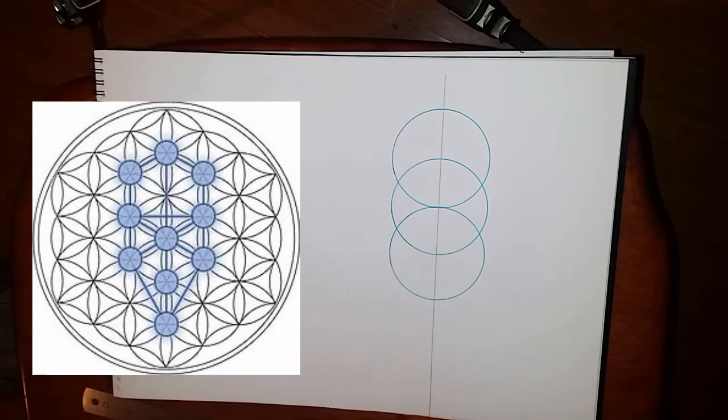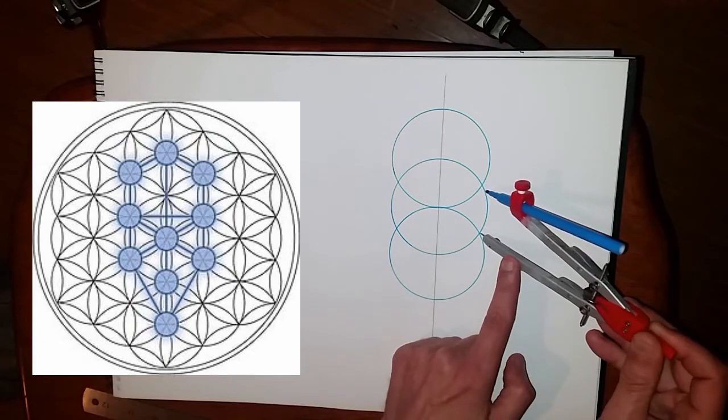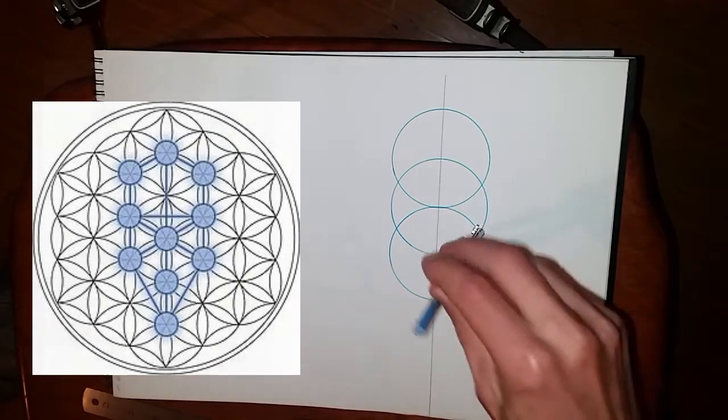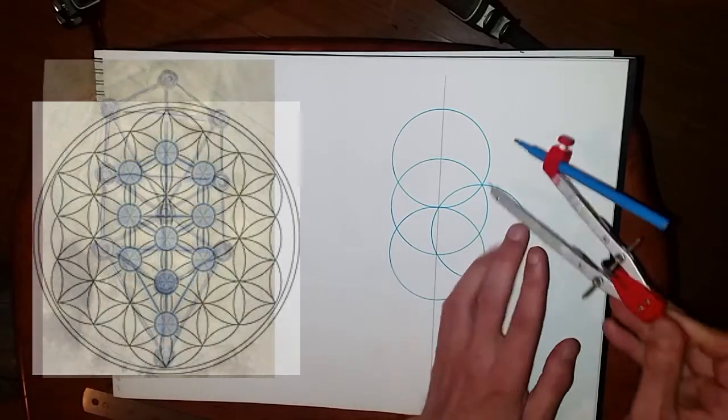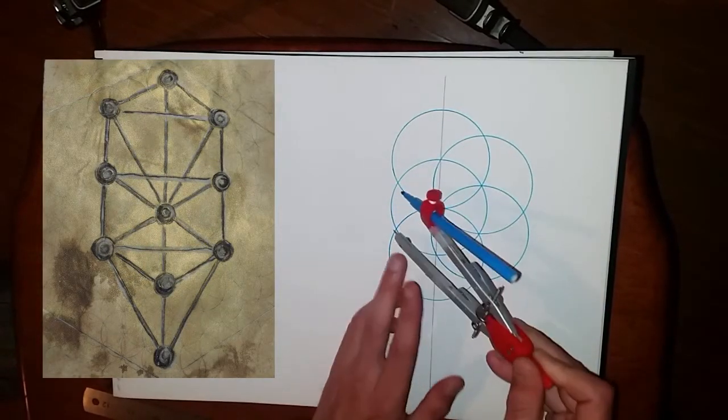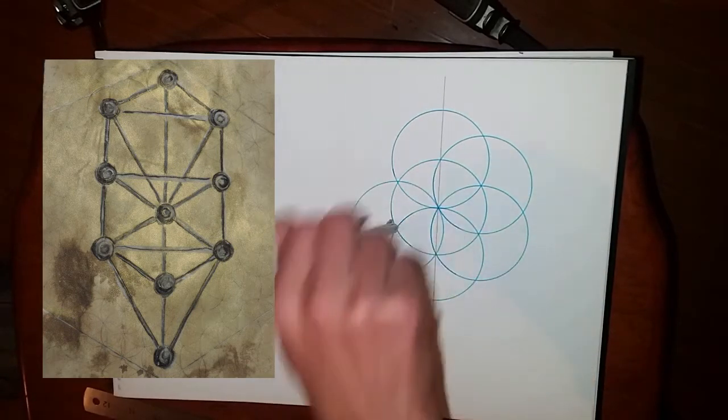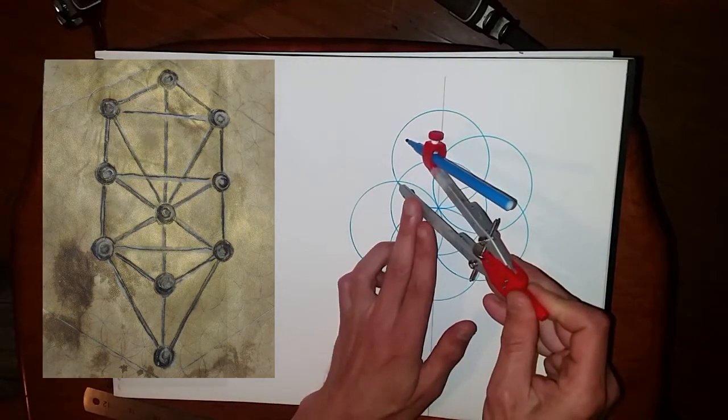If you do now a third circle, we have one, two, three circles. And if we do four more, so where these circles intersect, compass point there, you repeat that one more time.